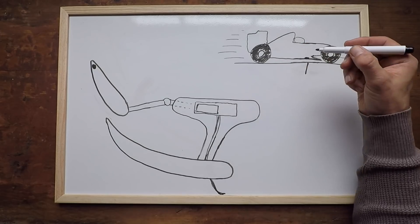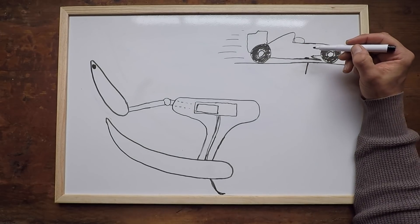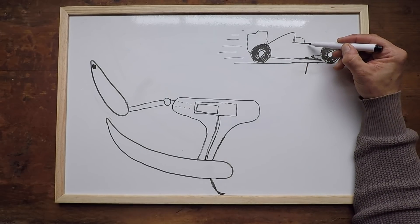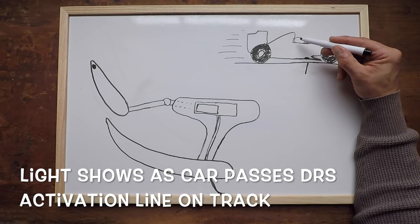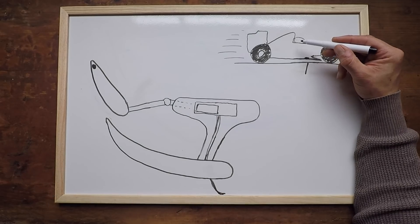This enables DRS on that car. It will show up in the form of a light on the dashboard or the steering wheel of that driver's car. Some teams will also put it as an audible tone inside the driver's crash helmet to make it more obvious.